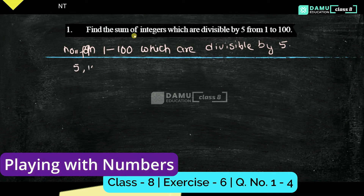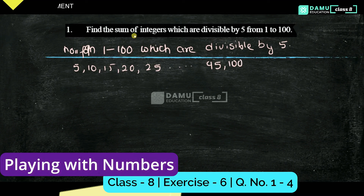The numbers divisible by 5 are: 5, 10, 15, 20, 25 and so on, up to 95 and 100. So these are the numbers which are divisible by 5, and we need to find their sum.